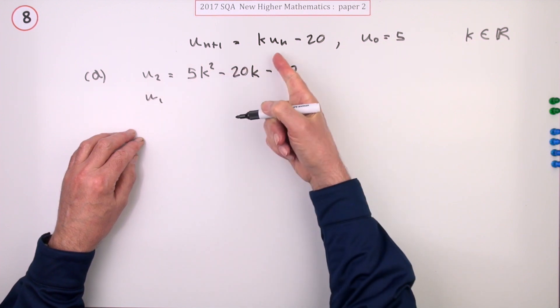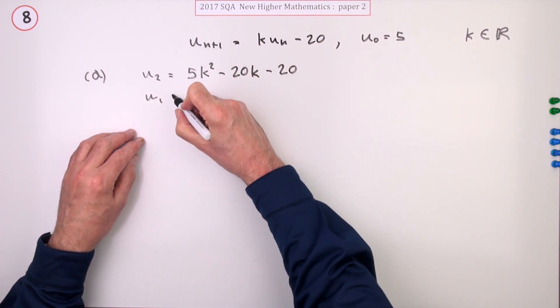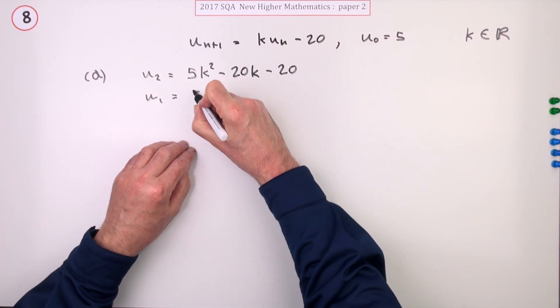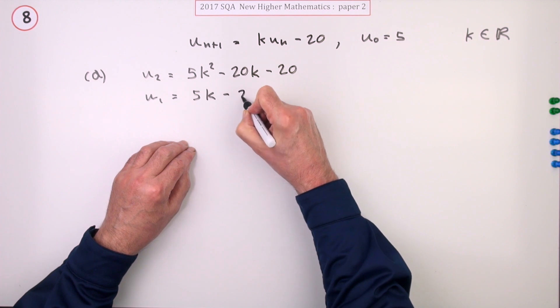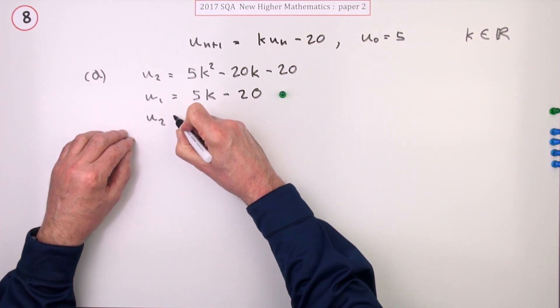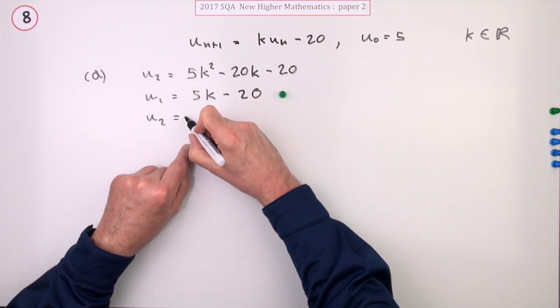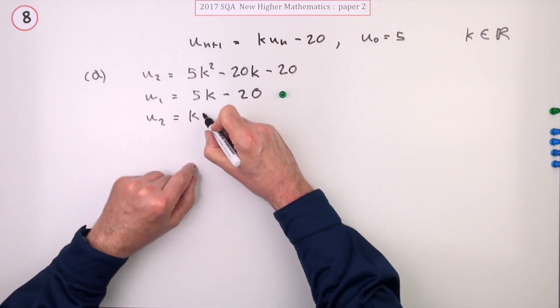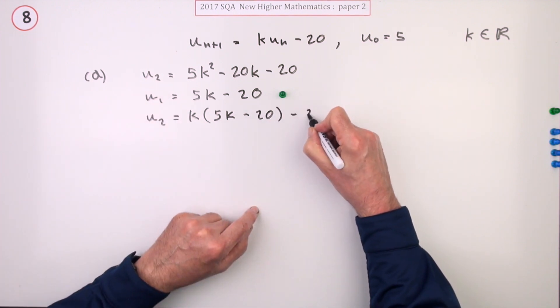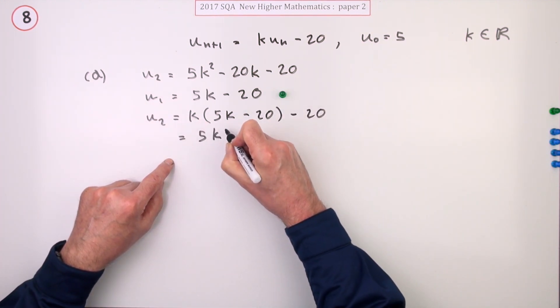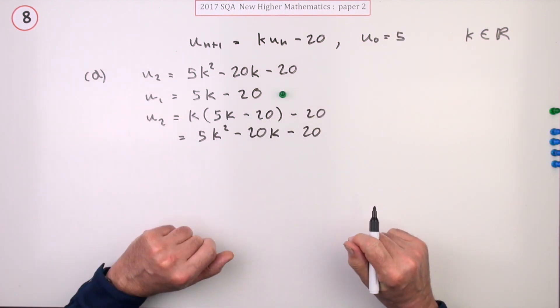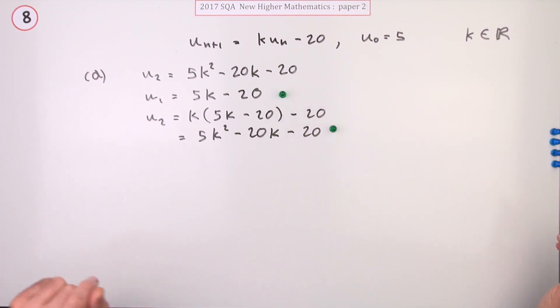If u0 is five, then u1 would be k times five minus 20, or 5k minus 20. That gets the first mark. Then u2 will be k times u1, so k times the previous term 5k minus 20, minus another 20, which gives 5k squared minus 20k minus 20 as required. Well that wasn't too hard.